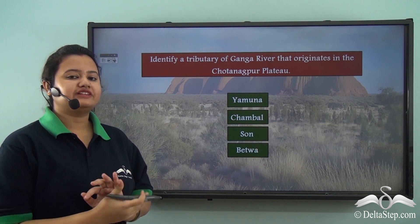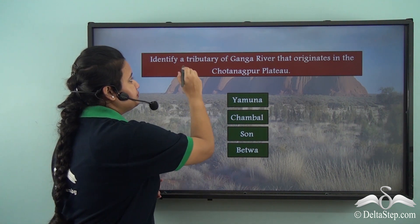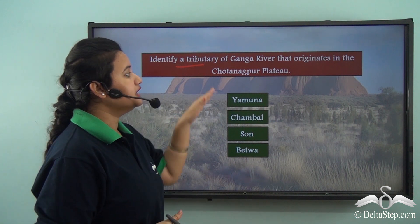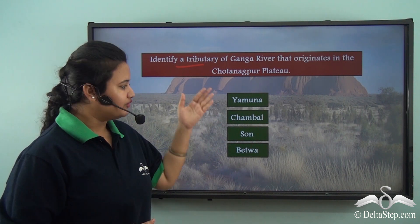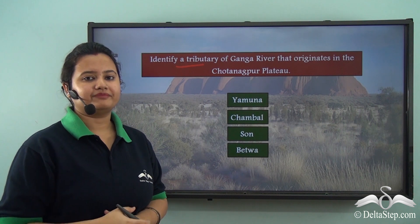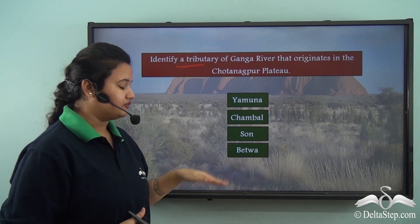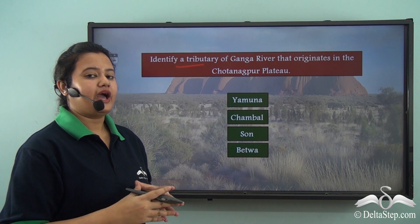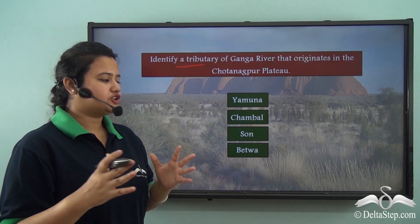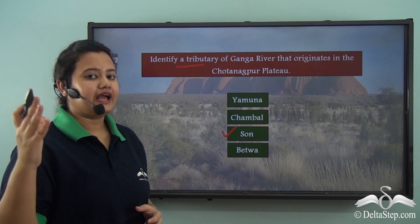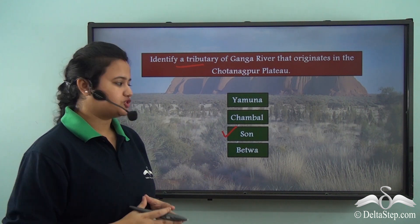A quick objective: identify a tributary of the Ganga that originates in the Chhota Nagpur Plateau — is it Yamuna, Chambal, Son, or Betwa? Chambal and Betwa originate in the Malwa Plateau and join the Yamuna River, so those are not the answer. The correct option is Son. Son and Damodar originate in the Chhota Nagpur Plateau and later join the Ganga River.